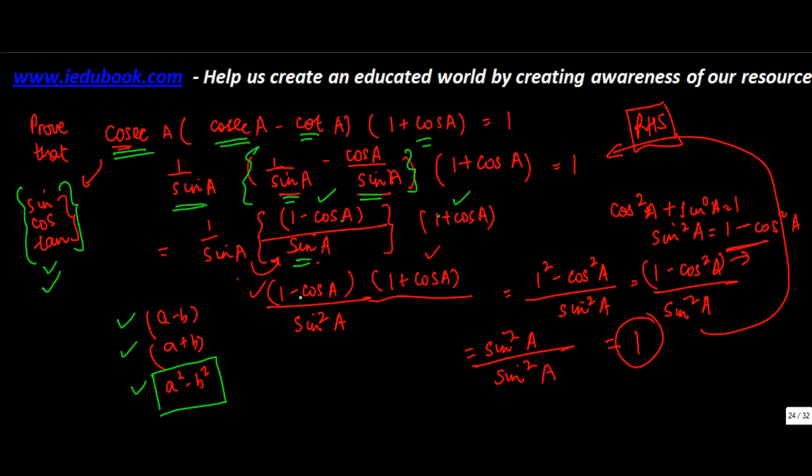Now if you remember that A minus B into A plus B is equal to A square minus B square, you will multiply these two to get 1 square minus cos square A. And the moment you get here, you know this is the identity which we have. You plug this into here: sine A into sine A is obviously sine square A.